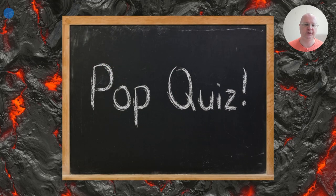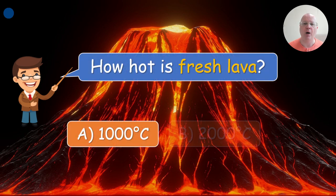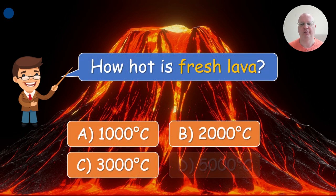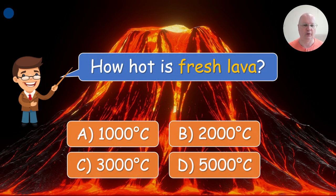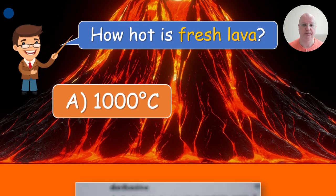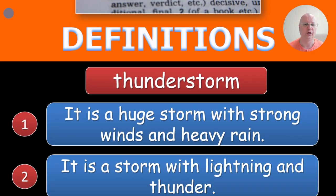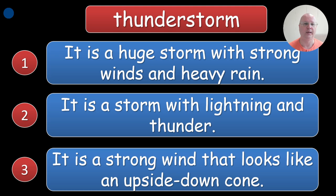Pop quiz: one student from each team. Here's the question — how hot is fresh lava? The correct answer is 1,000 degrees Celsius. Now you get to play some games or activities. The first one is called Definitions — you invite a student from each team, show them the slides, and they need to match the word to its definition.